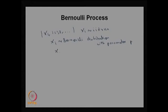In notation, X_i ~ B(1, p), that is a binomial distribution with parameters 1 and p, which is the same as each X_i being Bernoulli distributed with parameter p. This collection is a stochastic process, or we can call it a stochastic sequence. Now I can define another random variable: for every n, S_n is the sum of the first n random variables.